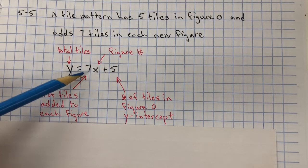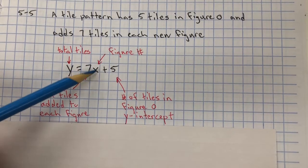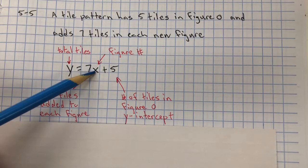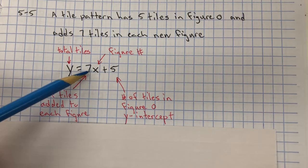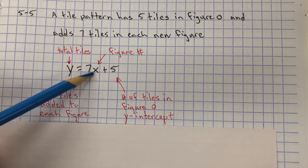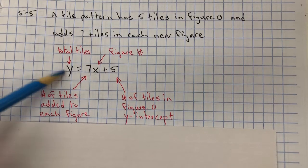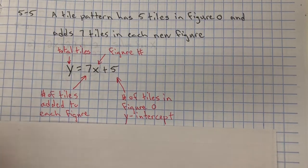So if we wanted to find out how many tiles were in figure 10, we would substitute 10 for X, and it would be 7 times 10 is 70, plus 5 is 75. So the total tiles for figure 10 would be 75.